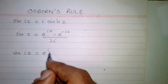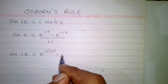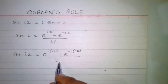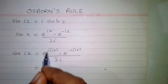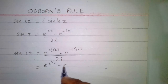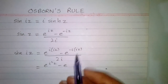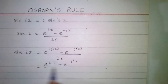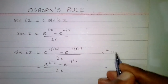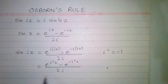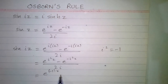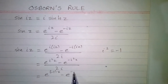So we have e to the power iota times iota z minus e to the power minus iota times iota z, upon two iota. Now, iota times iota z is iota squared z, and minus iota times iota z is minus iota squared z, upon two iota. Since iota squared equals minus one, we substitute to get e to the power minus z minus e to the power minus times minus one times z, upon two iota.